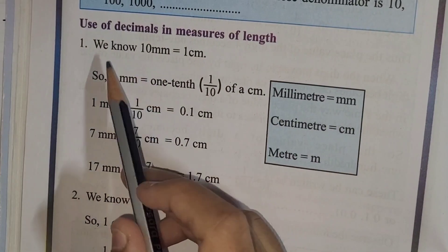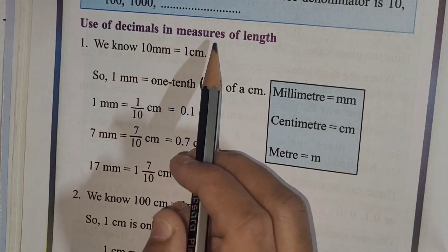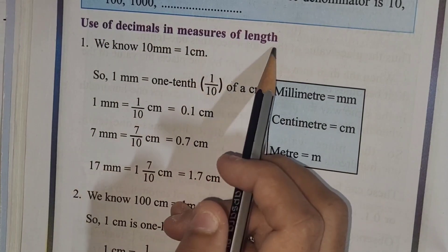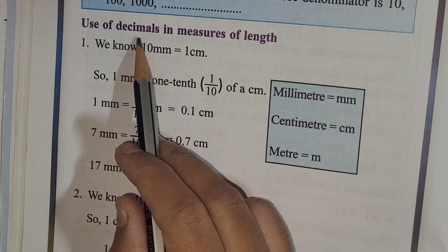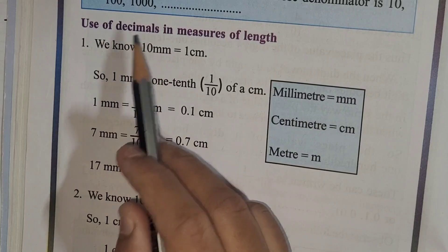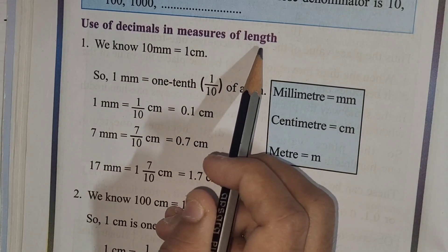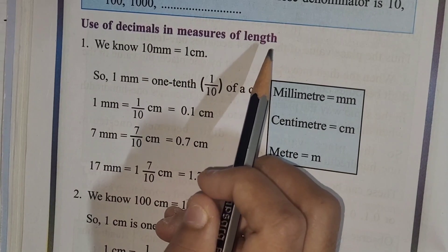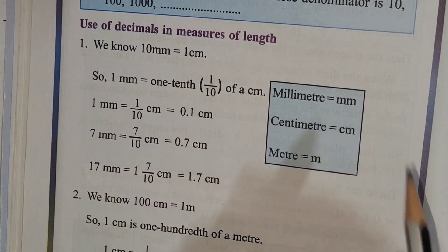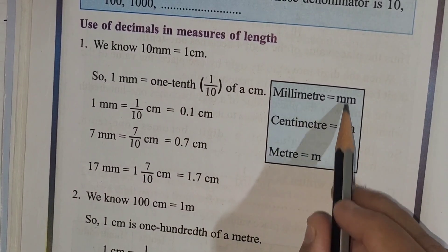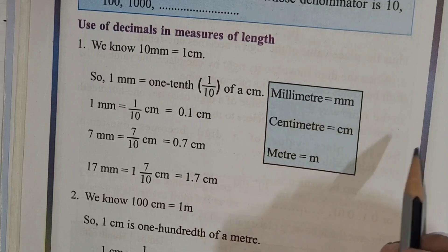The next concept is the use of decimals in measures of length. We are going to learn how to use decimals while measuring length. As we know, we use these units: meter, centimeter, and millimeter.